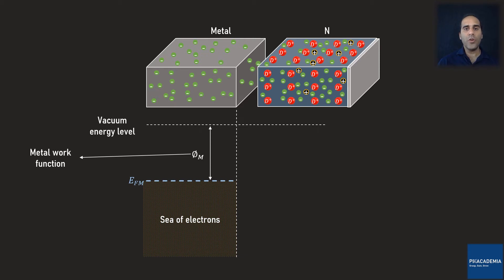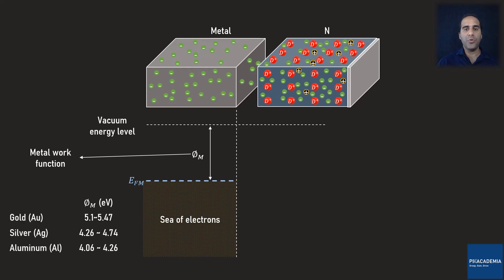The metal work function is different for different metals. For example, gold has a work function of around 5.1 to 5.47 electron volts. For silver, it is around 4.26 to 4.74 electron volts. And for aluminum, it is around 4.06 to 4.26 electron volts.